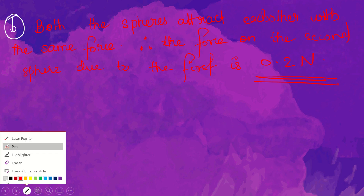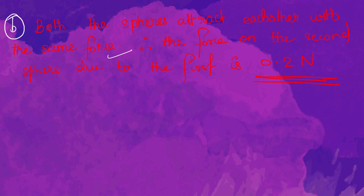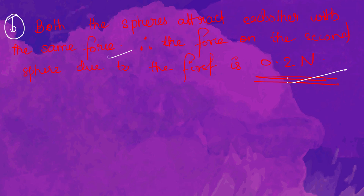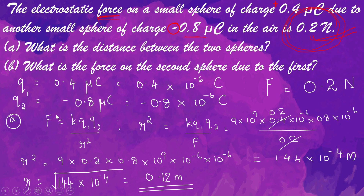Both spheres attract each other with the same force. Since the force is the same, the force on the second sphere due to the first is 0.2 newton. To find the distance between the two spheres, use Coulomb's Law equation. To find the force on the second sphere, apply Newton's third law. Hope it has been clear. If you have any doubts, put your questions in the comment section and I will surely reply. Bye-bye.